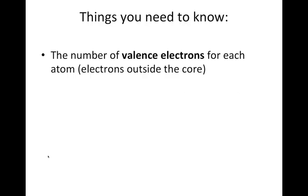The things you need to know are first the number of valence electrons for each atom, that is, the electrons that are outside the core and available for bonding. So typical atoms are hydrogen, which has one valence electron, boron three, carbon four, nitrogen five, oxygen six, fluorine seven, fluorine and the rest of the halogens.